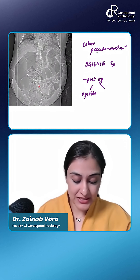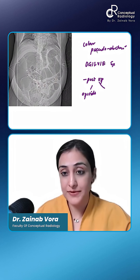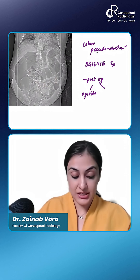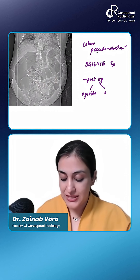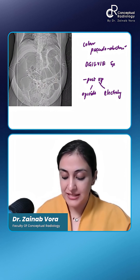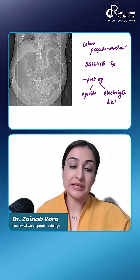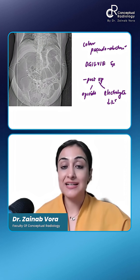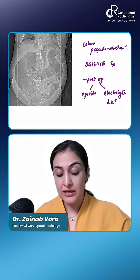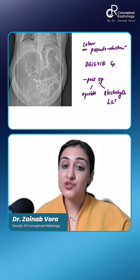You can see the small bowel loops are all collapsed in the center. So the causes are opioids and electrolyte abnormalities, predominantly hypokalemia. When you see that it's the colon, particularly in elderly patients, this is Ogilvie syndrome.